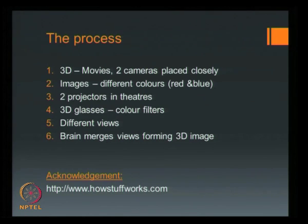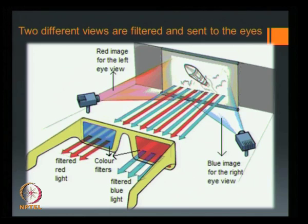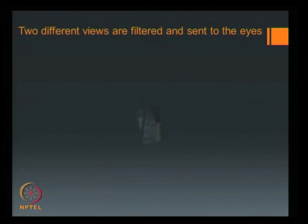The 3D movies are taken using red and blue cameras placed closely, and in theatres, the colour filters in the 3D glasses allow only red light to enter the left eye and blue light to enter the right eye, which when merged by the brain gives us a 3D image.